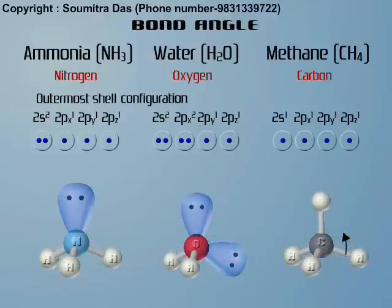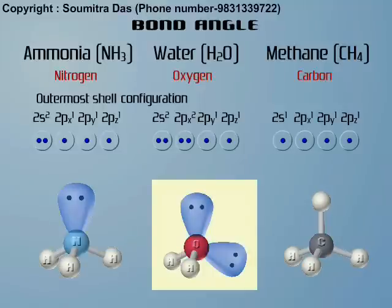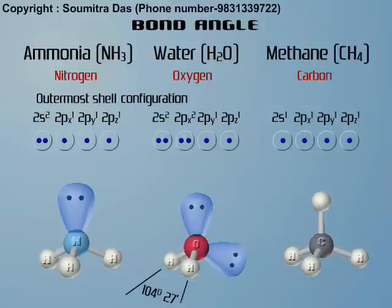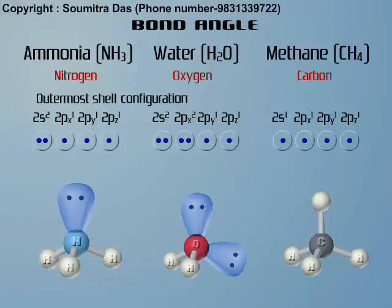For sp3 hybridization, the bond angle is 109 degrees 28 minutes, which is applicable for methane only. Due to the presence of lone pairs in ammonia and water, the bonded pairs are repelled, reducing the bond angle. In water, there are two lone pairs, therefore the bond electrons are repelled more, and the bond angle is 104 degrees 27 minutes. In ammonia, there is only one lone pair, therefore the bond electron is slightly repelled, and the bond angle is 105 degrees 45 minutes.